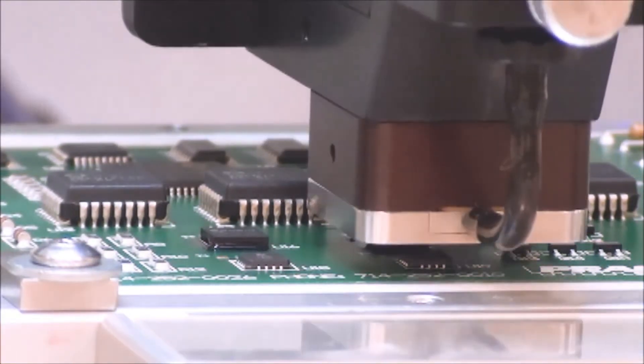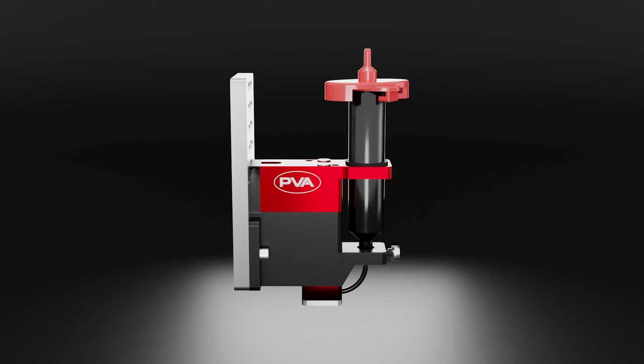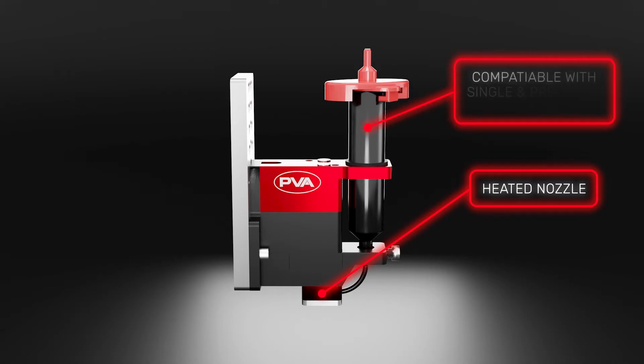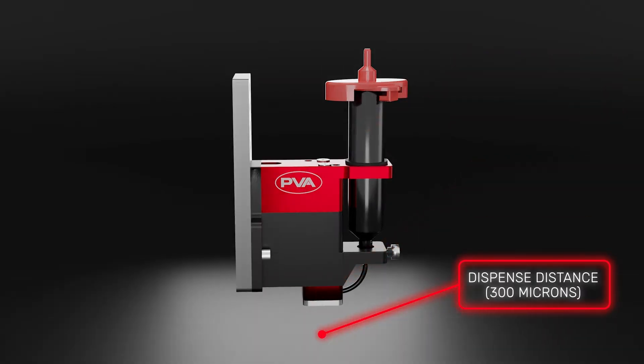PVA's non-contact jet is ideal for underfill applications. The JDX comes with a standard heated nozzle, is compatible with a variety of single component or pre-mixed and frozen materials, and can dispense into tight areas with a clearance of 300 microns.